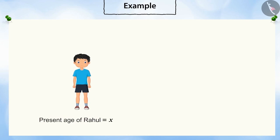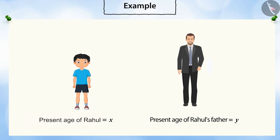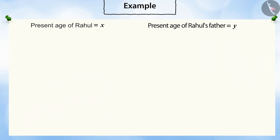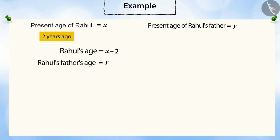Let the present age of Rahul be X and his father's present age be Y. If Rahul's present age is X, then two years ago both of them would have been two years younger. That is, two years ago Rahul's age was X minus two and his father's age was Y minus two.